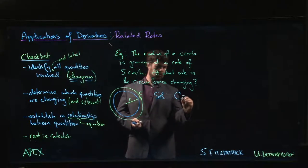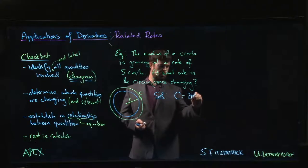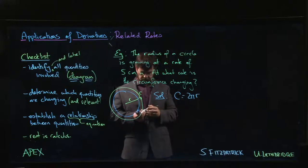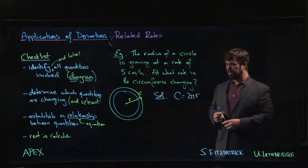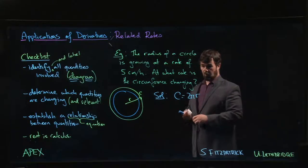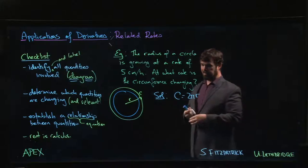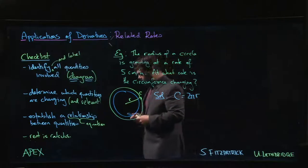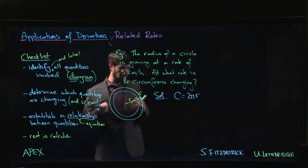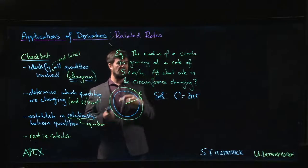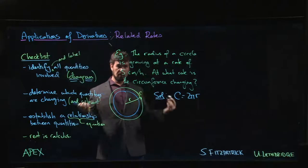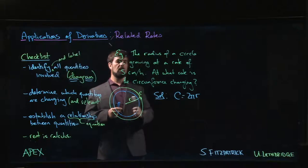The circumference is just 2π times the radius. Now this is a particularly simple problem in that the two quantities are proportional. If you have two quantities that are proportional, it seems intuitive that the rates at which they change should also be proportional. So if we know the rate at which the radius is changing, we should multiply by 2π and we've got the rate at which the circumference is changing. Simple enough.